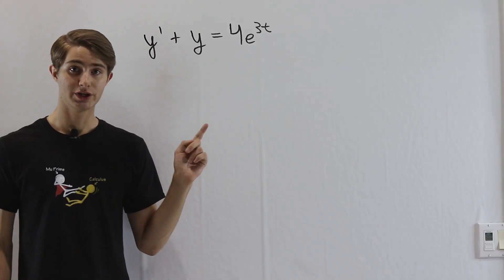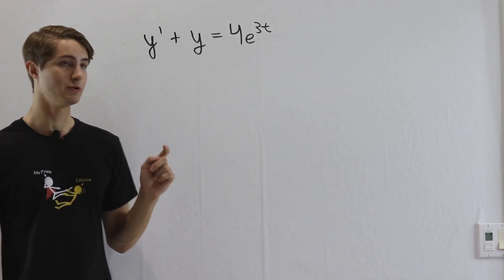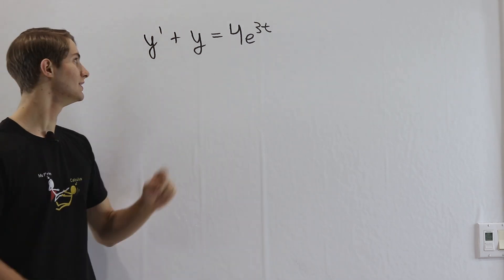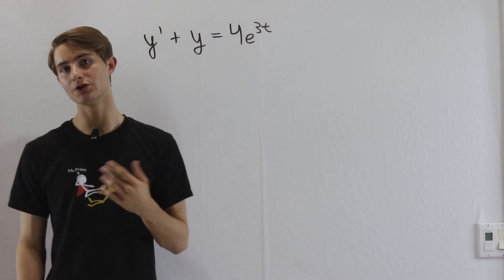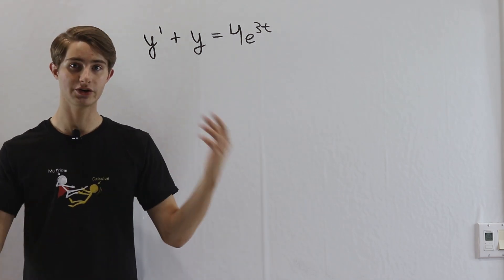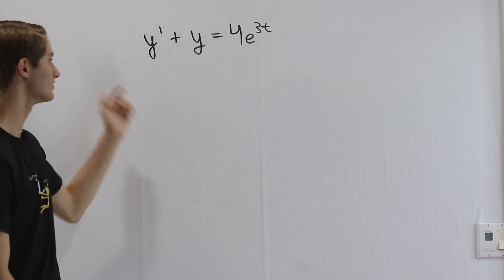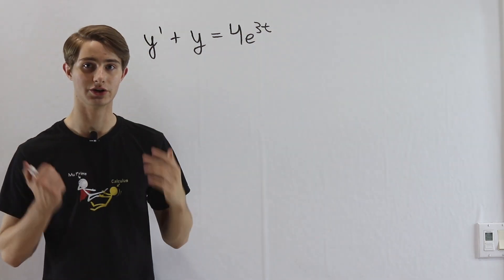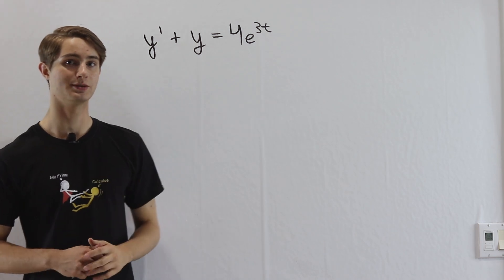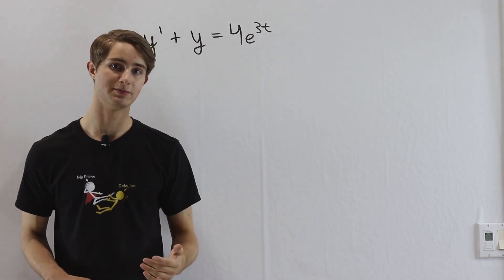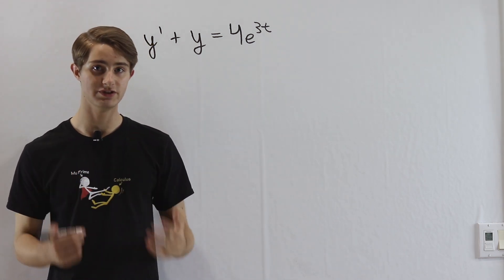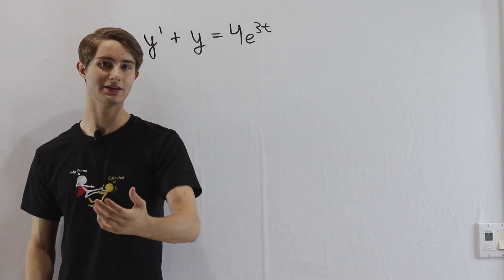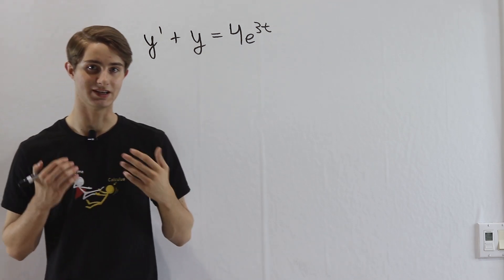We are going to learn the Laplace transform method of solving differential equations and use it on the example y' plus y equals 4e^(3t). This is a fairly simple example, but all the results we learn here will generalize to much harder differential equations — things that are second order and third order with cosines and sines on the right side. There are a lot of things you can solve with Laplace transforms. When I originally learned Laplace transforms, they were very confusing because all of the ideas of taking an integral and multiplying by e to the negative st, and why this works so well, didn't really make sense to me.